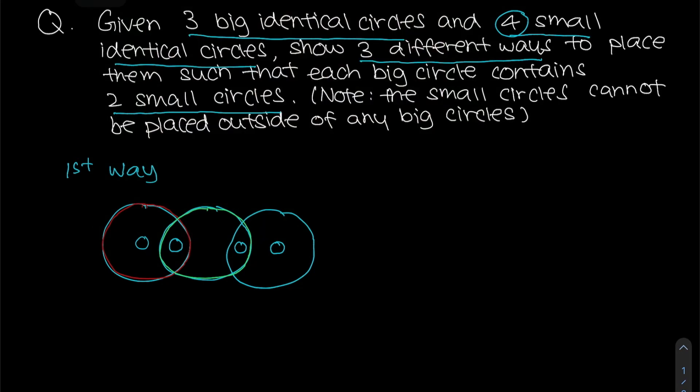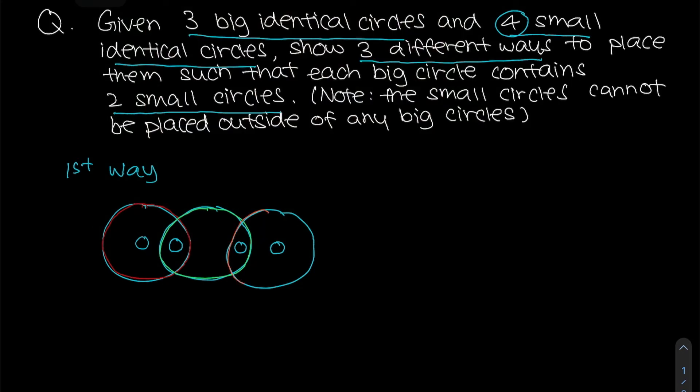Similarly, you'll notice that the last one will also have two small circles. And this is actually your answer for one of the ways. That is the first way.